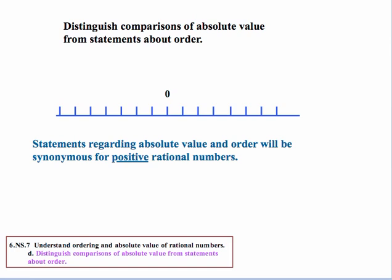Now let's look at the specific standard here, D. Distinguish comparisons of absolute value from statements about order. Now, when we're dealing with positive rational numbers, there really isn't any confusion between the two ideas, absolute value versus order, because there will be one and the same. So for example, let's say we're talking about a distance of five.